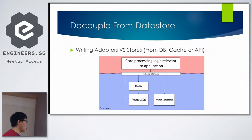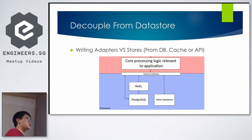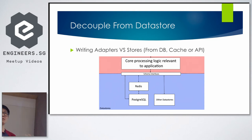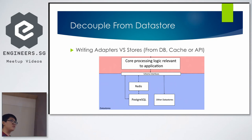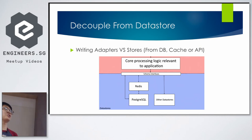We did the same thing for our datastore layer by implementing our own adapters interfacing between core logic and our datastores. This means today we can use Postgres, tomorrow we can change to MySQL just by changing the adapters, and the day after we can put a cache in front — same interface, same methods. We're even using a third-party service called Algolia to help build our feed functionality. With the abstraction behind these adapters, there's no need to know whether it's an API endpoint or an actual datastore.